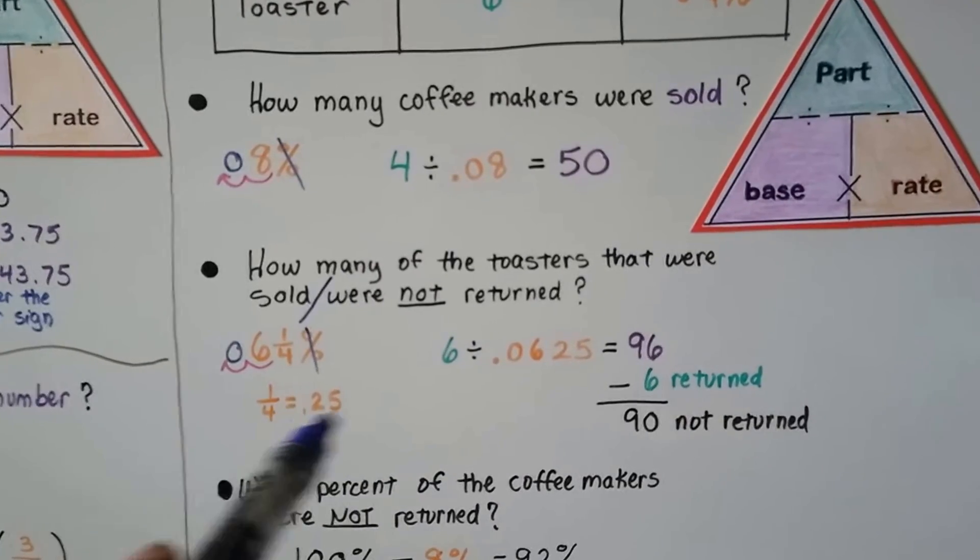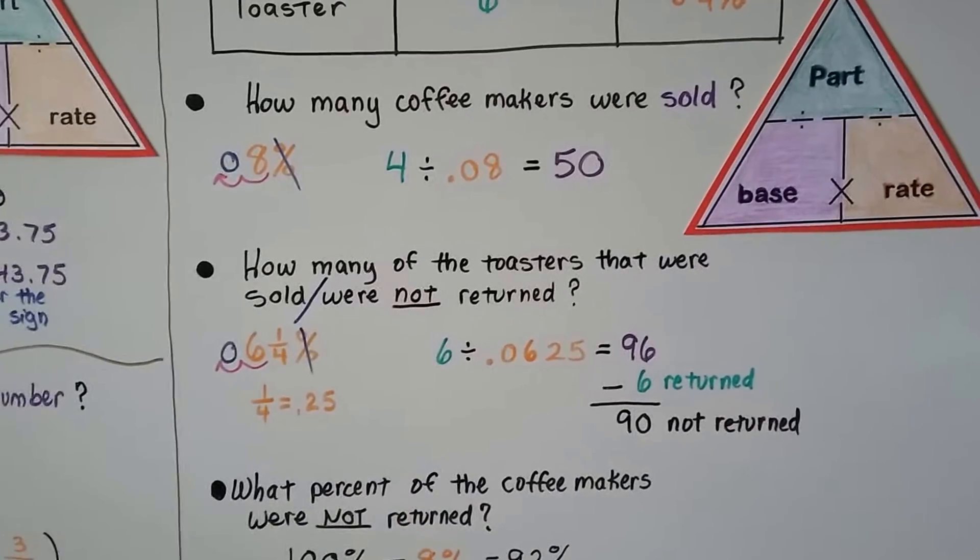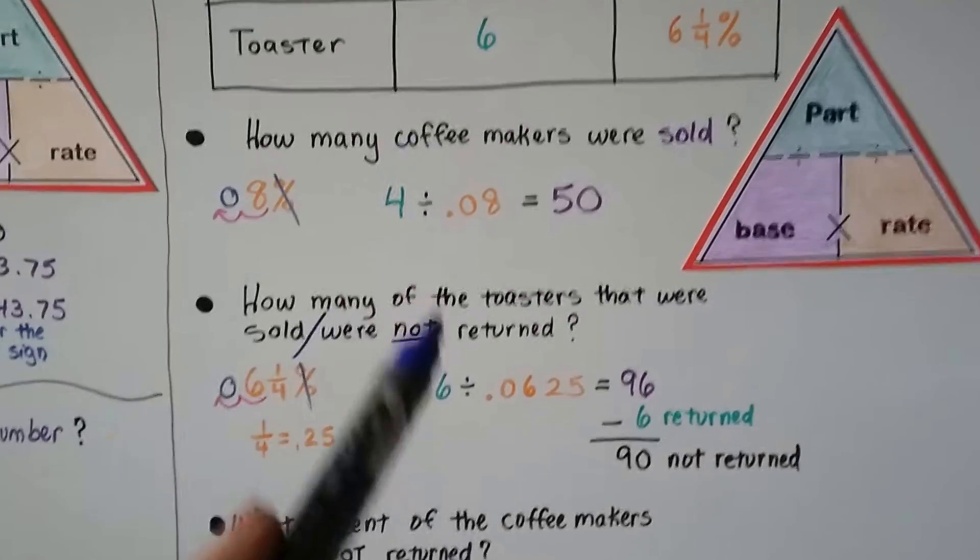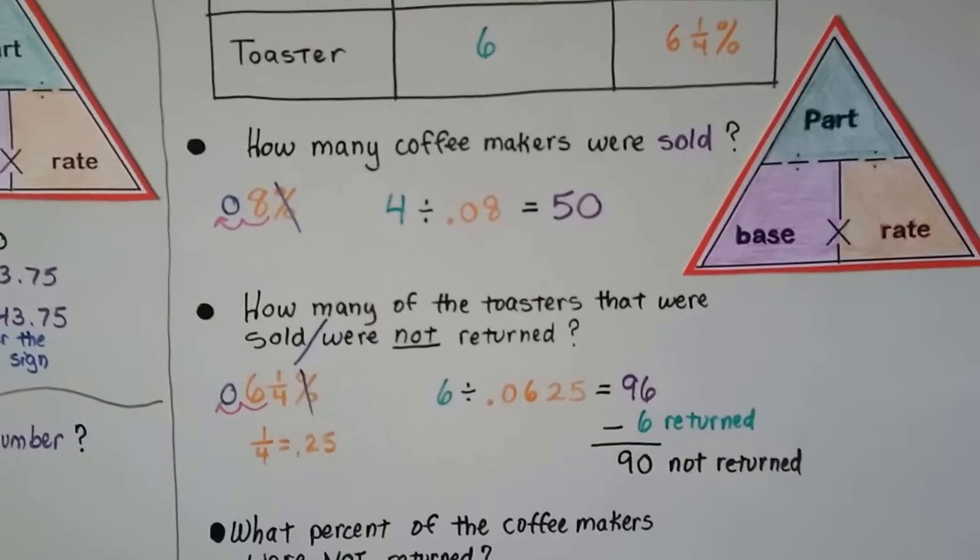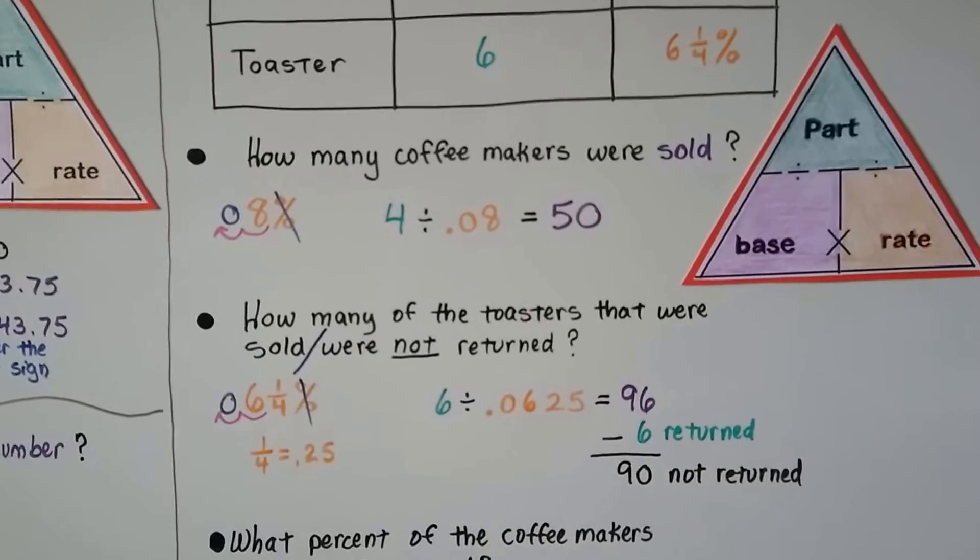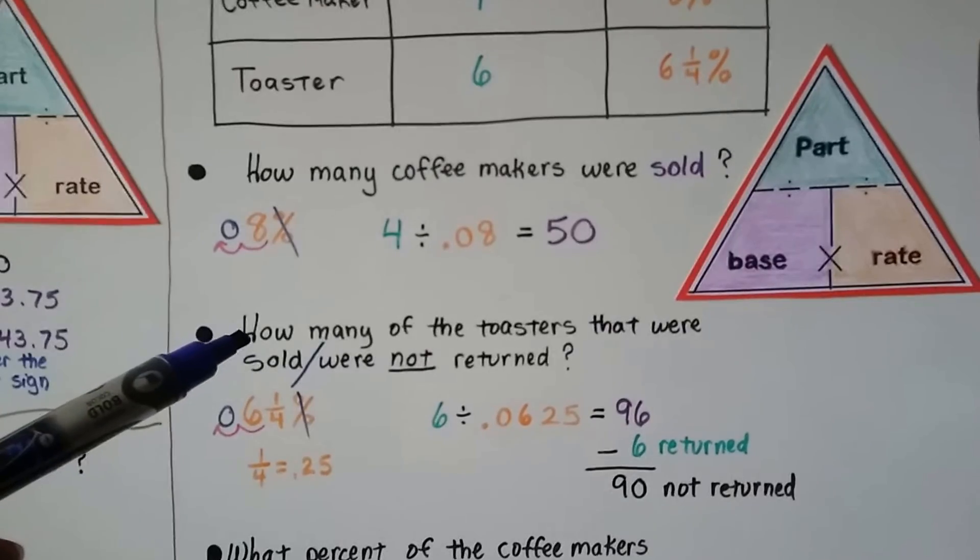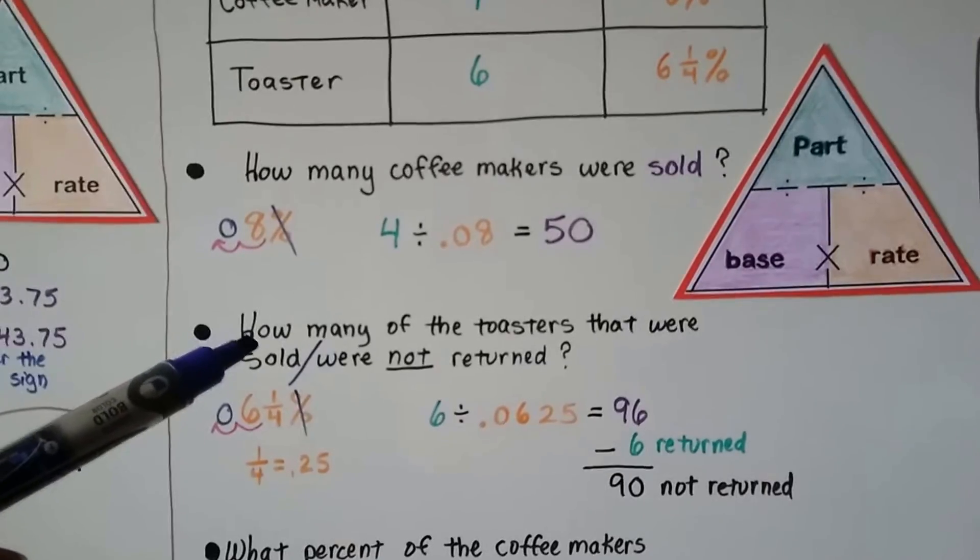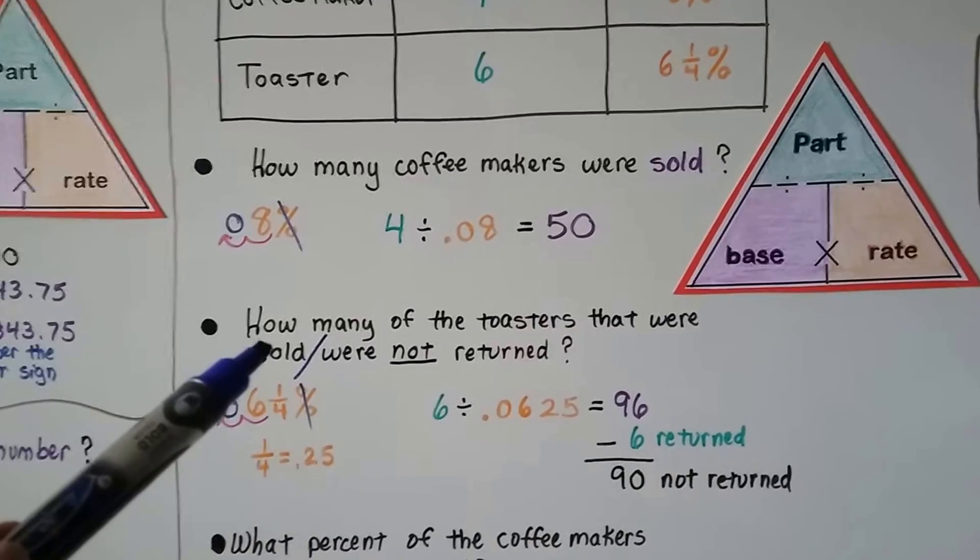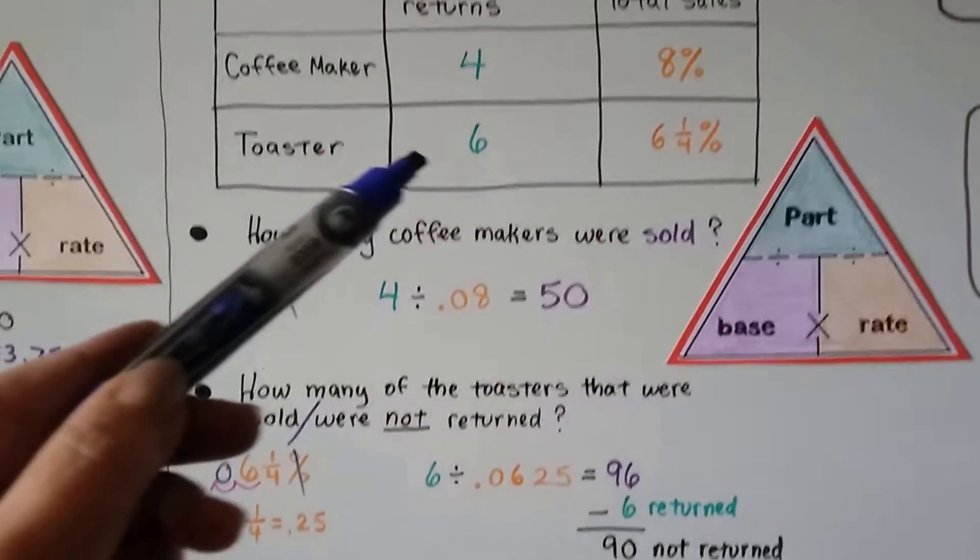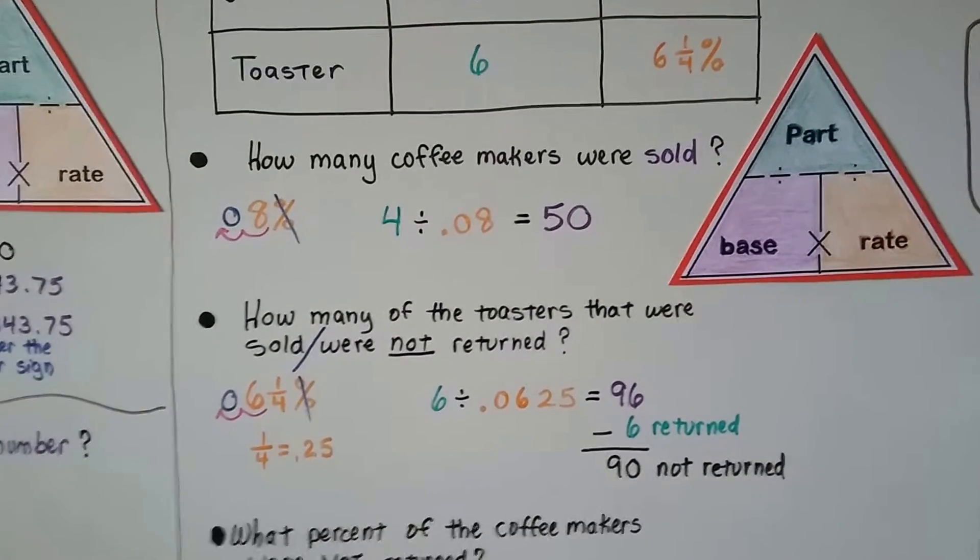We don't put another decimal point. It's just .0625 for six and one-fourth percent. Now we do the six divided by that .0625, that part divided by the rate. We get 96 were the totals that were sold. So how many of the toasters that were sold, the 96, now we can finish the question, were not returned? Well, we know there were six returns, so we do the 96 minus six and we get 90 were not returned.